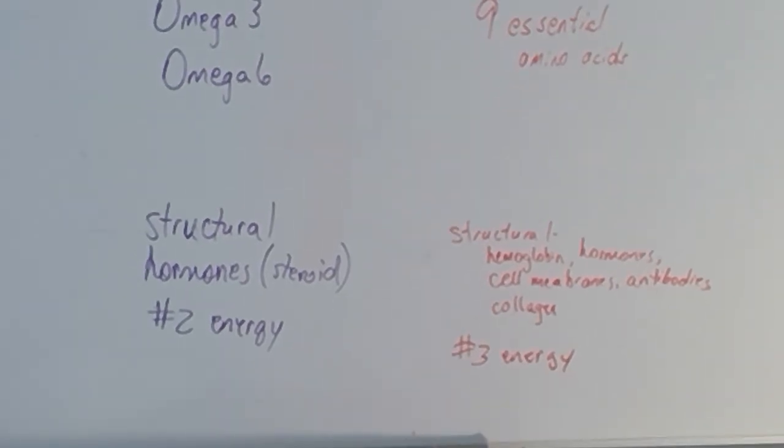The number, I have number three energy there. Whenever your body needs energy to be made, it's going to first use carbohydrates for energy. Its second source of energy usually is going to be fats. And the third thing your body's going to use for energy, in other words, it really doesn't want to use it, but proteins can be used for energy if there are not enough or if there are insufficient amounts of carbs and lipids or if certain conditions warrant it.